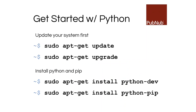Let's get started with Python. Before you install anything, you'll want to update all the software and upgrade the system — otherwise you might see errors when trying to install something else. Fair warning: this upgrade might take five or ten minutes. After that, install Python using `python-dev`, and then install the package manager pip.